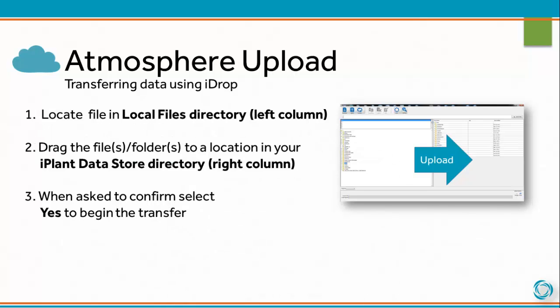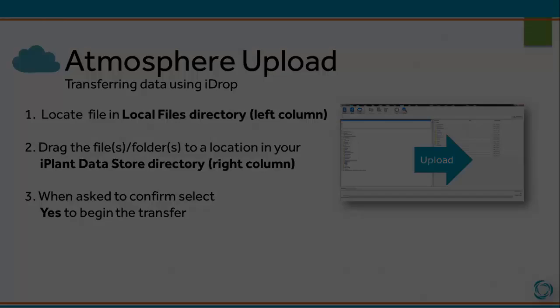To upload to Atmosphere using iDrop, locate a file in your local directory. Drag a file or folders into a location in your iPlant datastore directory. When asked to confirm, select yes to begin the transfer.